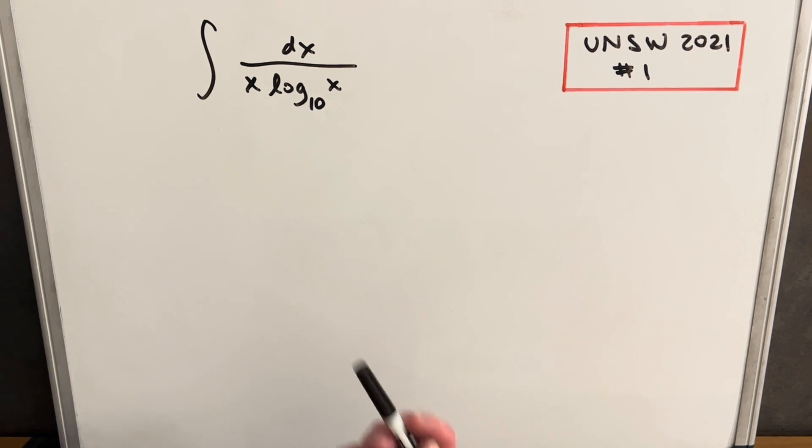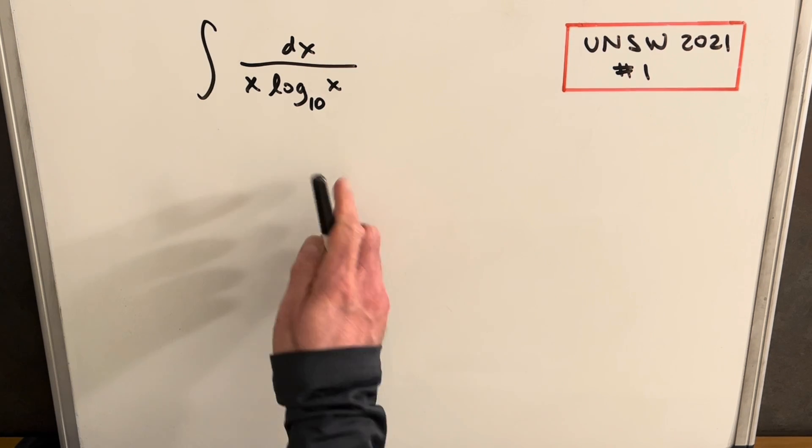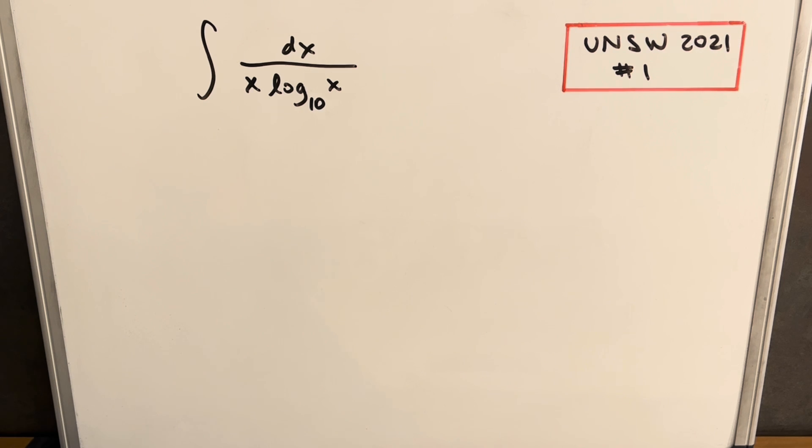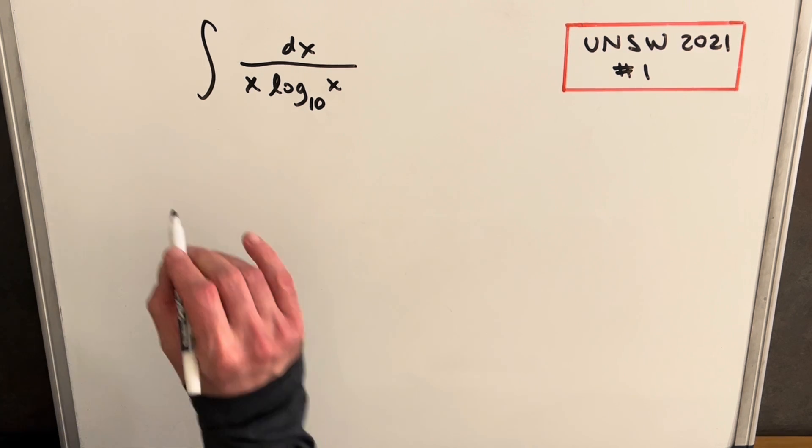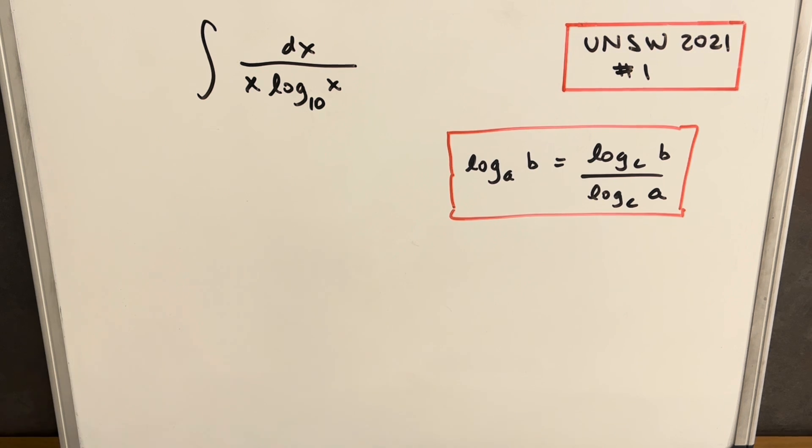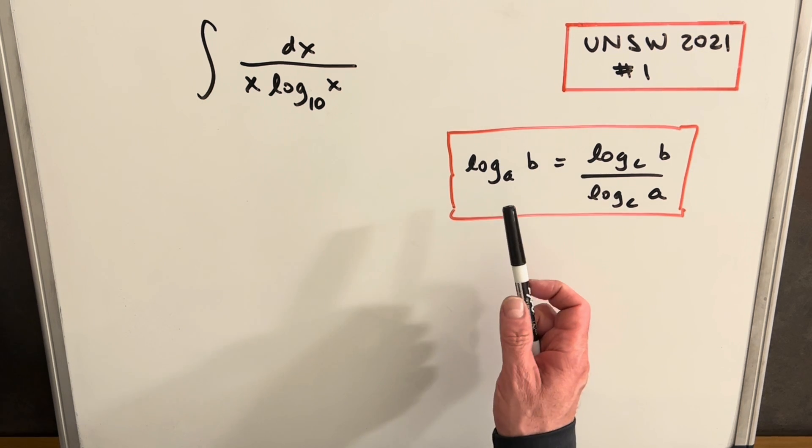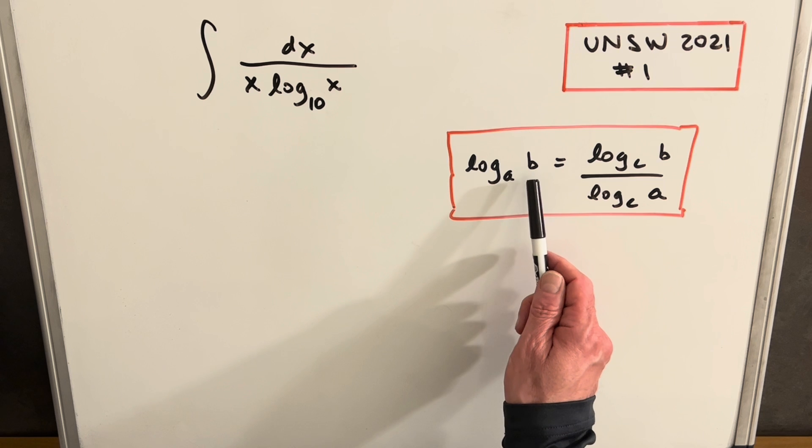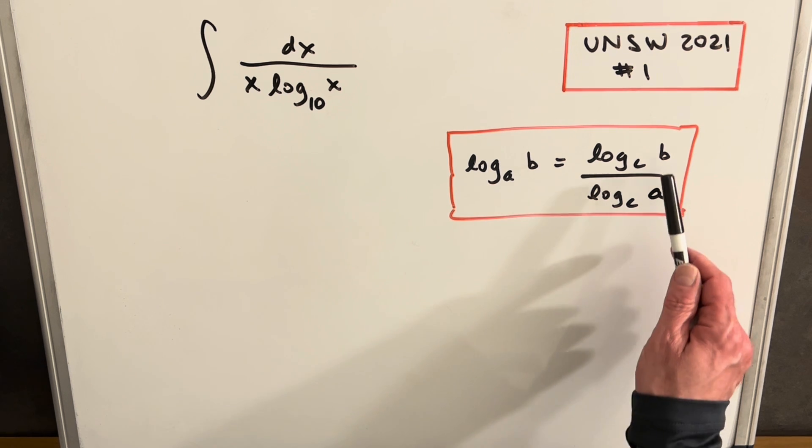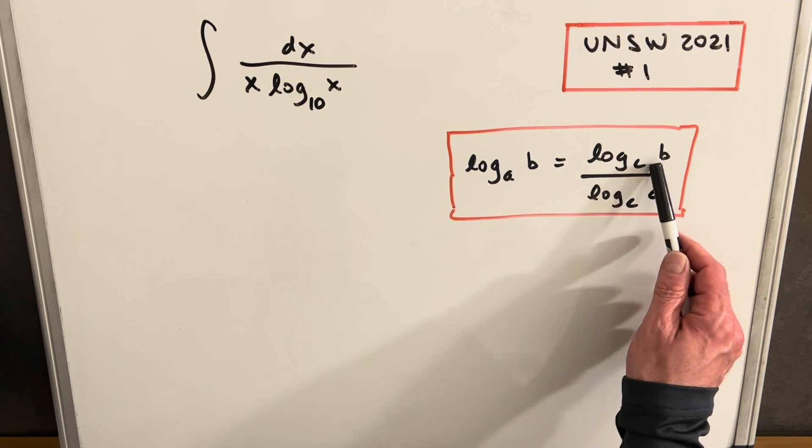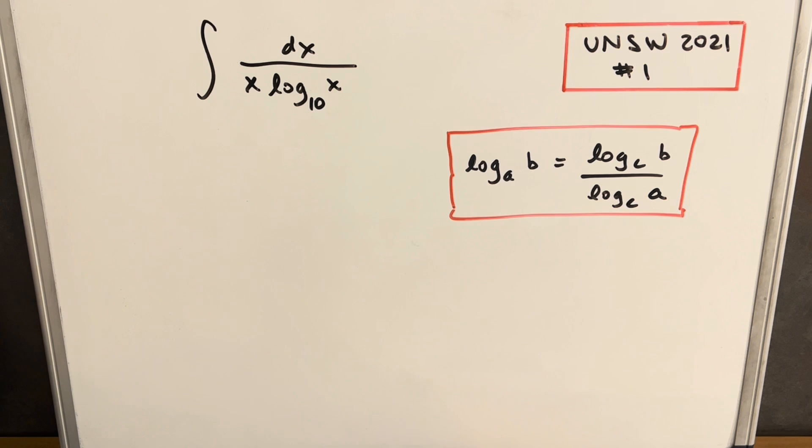The first thing we want to do - in an integral, we almost never want log base 10 or anything but ln. We really want to work with ln. What we can do for that is use the change of base formula. This formula on the right shows that we have log base A of B. We can split it up as a fraction and choose a base C. So we have a way to rewrite this.